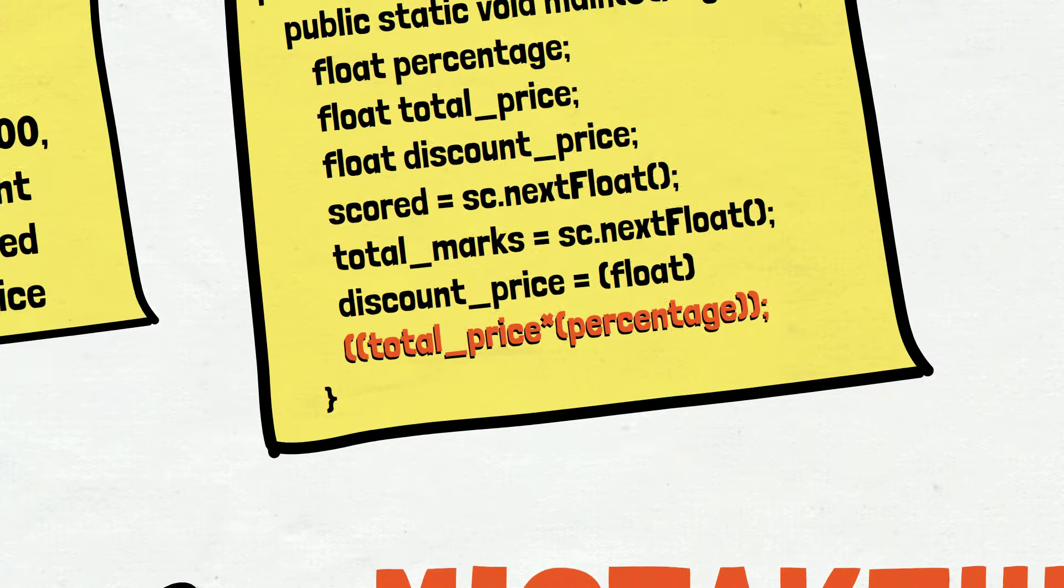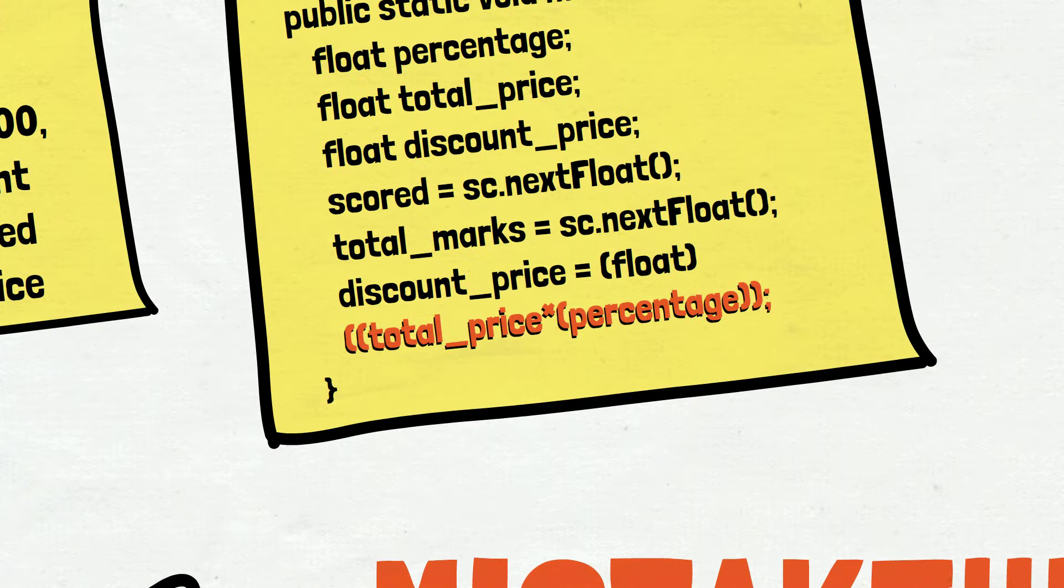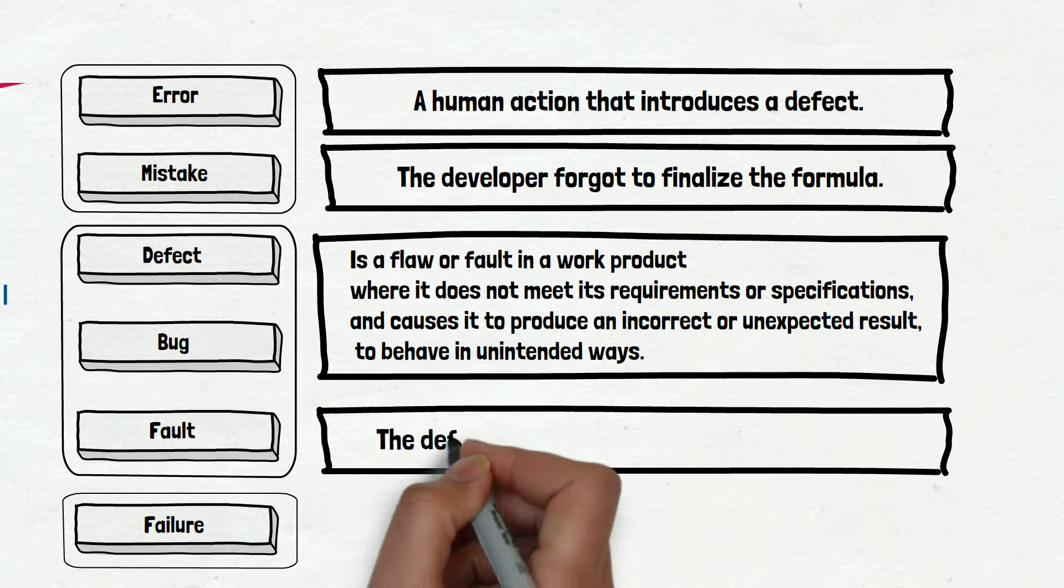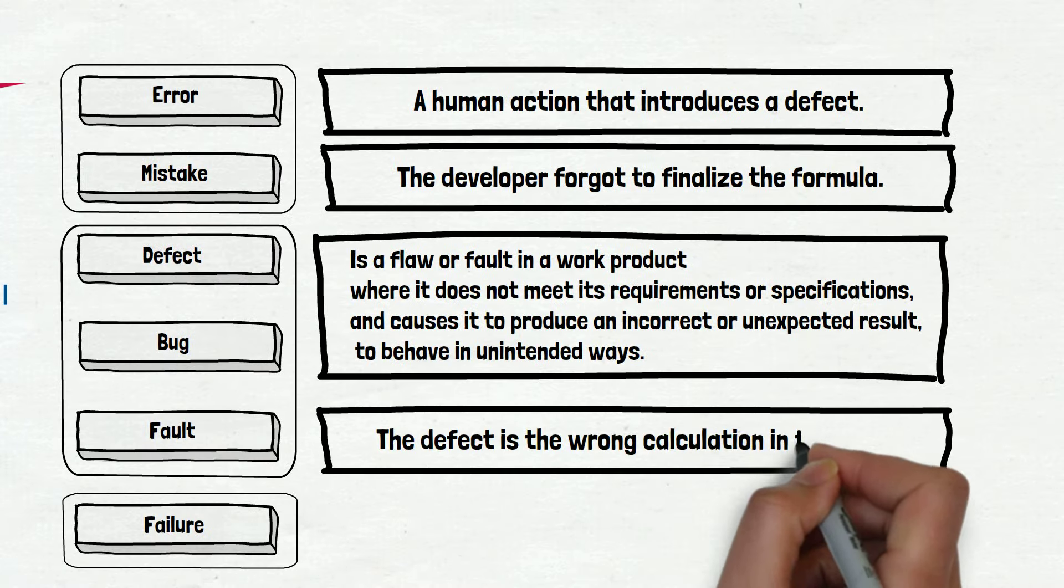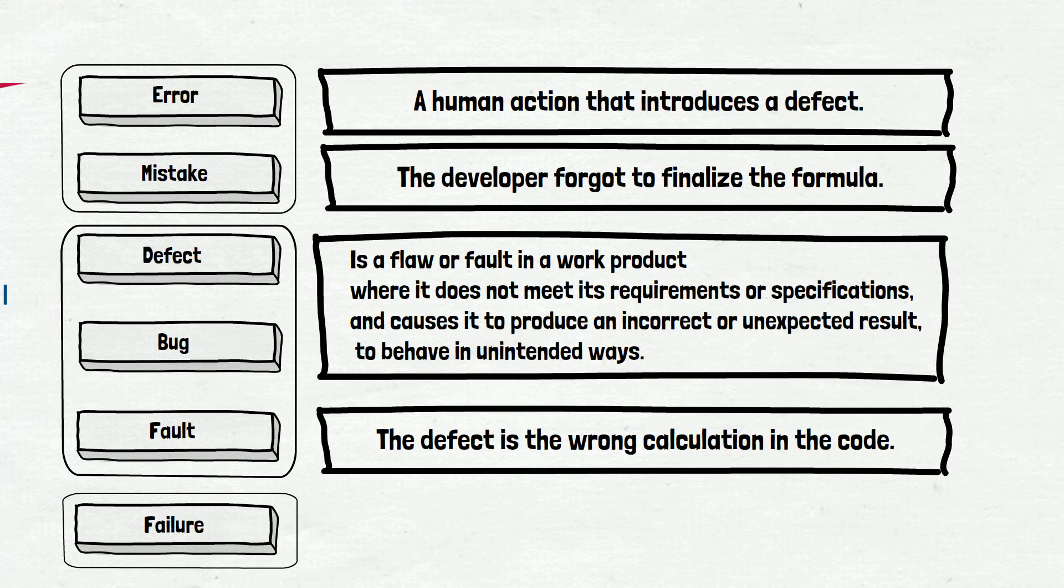But not in this case. You already saw it. The unfinished formula, the wrong calculations in the code—this is the bug itself. Let's write it down. The defect is the wrong calculation in the code. But we don't think writing it down really helps to understand the concept. When you look at the formula and code, you have no idea what is wrong there. And the best way to illustrate that is to talk about the last word in our list: The failure.